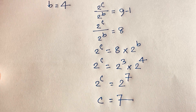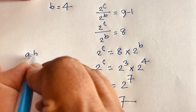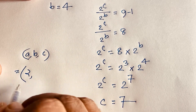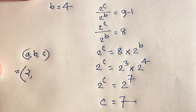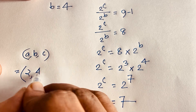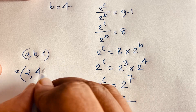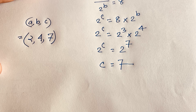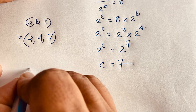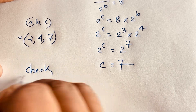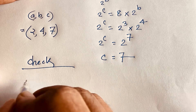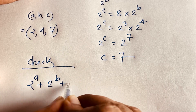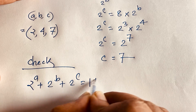So our final answer is: a is equal to 2, b is equal to 4, and c is equal to 7. This is our final answer in this Math Olympiad question. Let's check: 2^a plus 2^b plus 2^c equals 148 is our question.